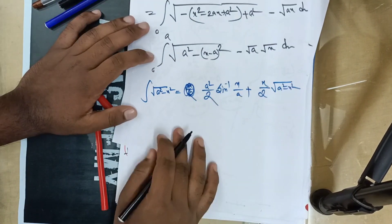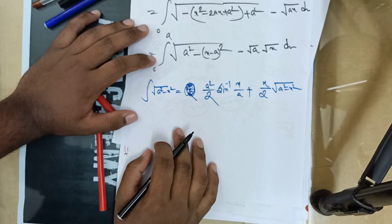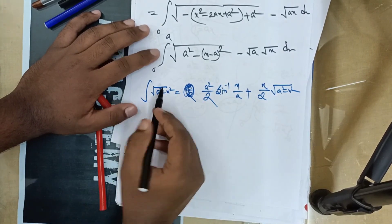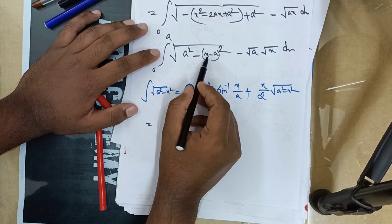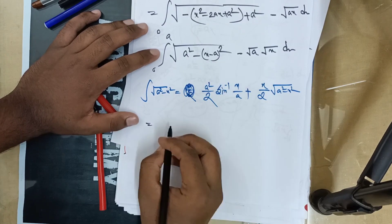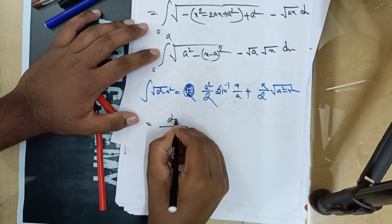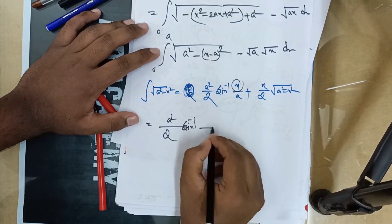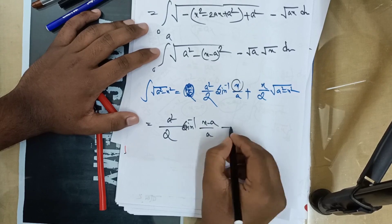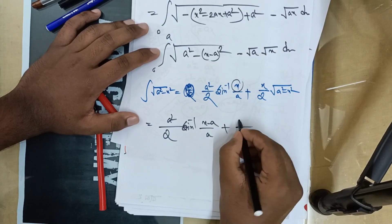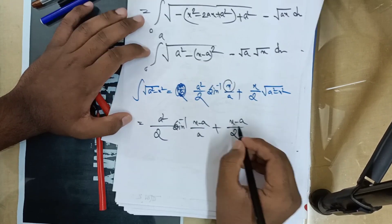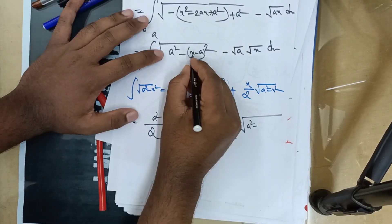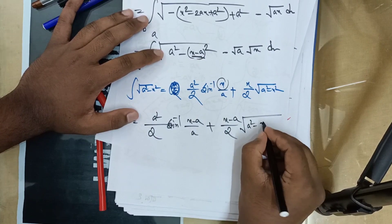Now, note the formula: root over a squared minus x squared integrates to a squared by 2 sin inverse of x over a, plus x by 2 root over a squared minus x squared. Here, wherever a appears, substitute a; wherever x appears, substitute x minus a. So root over a squared minus (x minus a) squared.